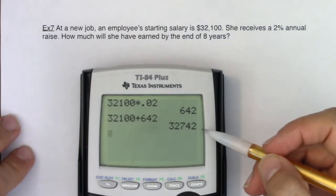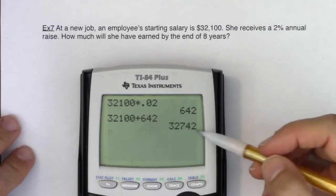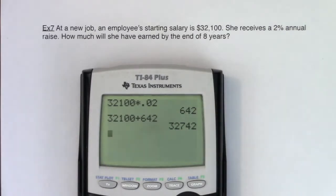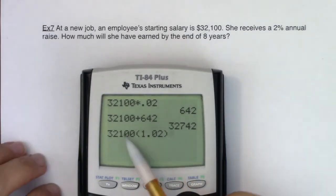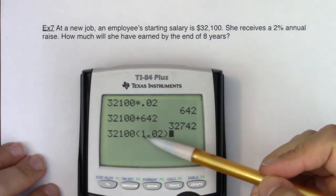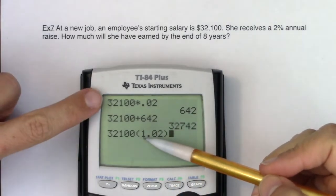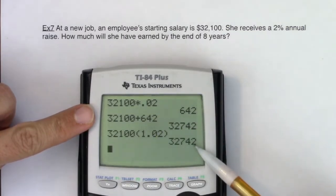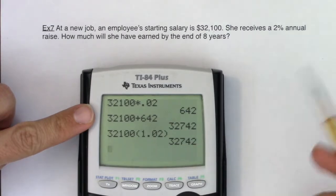And you'd say, during her second year, she's going to make $32,742. And that's correct. But what I would argue is it's faster and more efficient to multiply her base salary, her starting salary by 1.02. The one represents what she originally got her first year and the 0.02 incorporates her 2% raise. And you see that during her second year, she's getting $32,742.